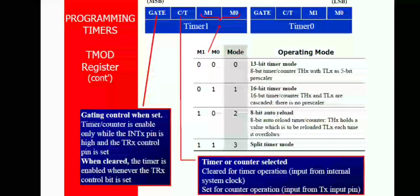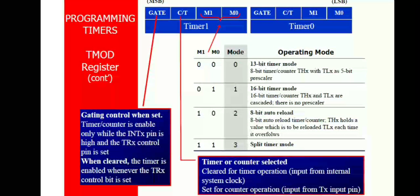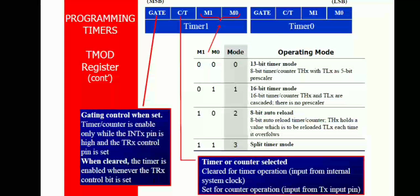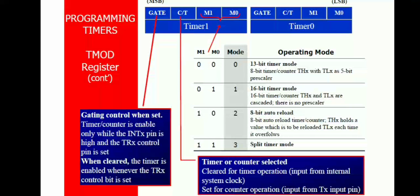Which type of mode operation to be selected can be defined with the help of M0 and M1. Whether the timer can be used as a timer or counter is decided by the C/T terminal. The Gate terminal controls when the timer is enabled only while the external pin or external interrupt pin is set. That is, external events can be counted with the help of the Gate terminal when it becomes logic 1.